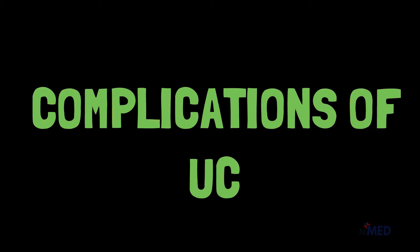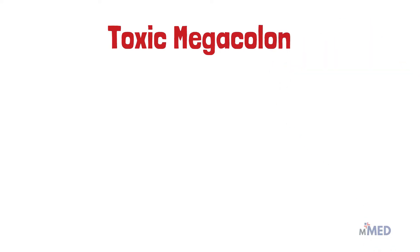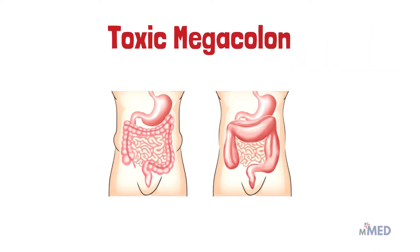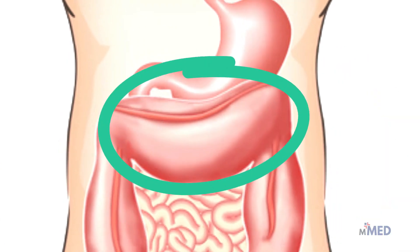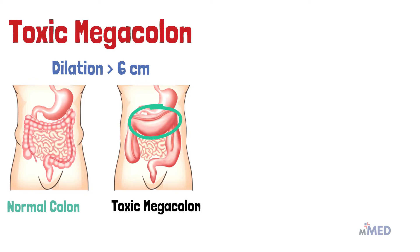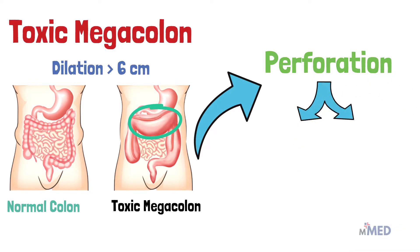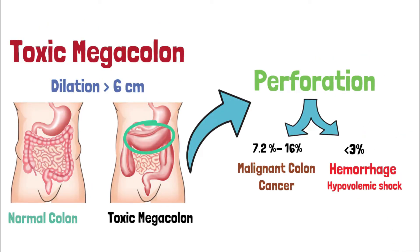The most important complication of ulcerative colitis is toxic megacolon, where inflammation extends to the colonic smooth muscle causing smooth muscle paralysis, colonic dilation, and systemic toxicity. If the colon is dilated more than 6 cm, it is considered toxic megacolon. This weakened state can lead to perforation and massive colon hemorrhage, occurring in less than 3% of cases, but if severe can result in hypovolemic shock. Ulcerative colitis increases the risk of colon cancer even more than Crohn's disease, with risk proportional to the severity and duration of disease.